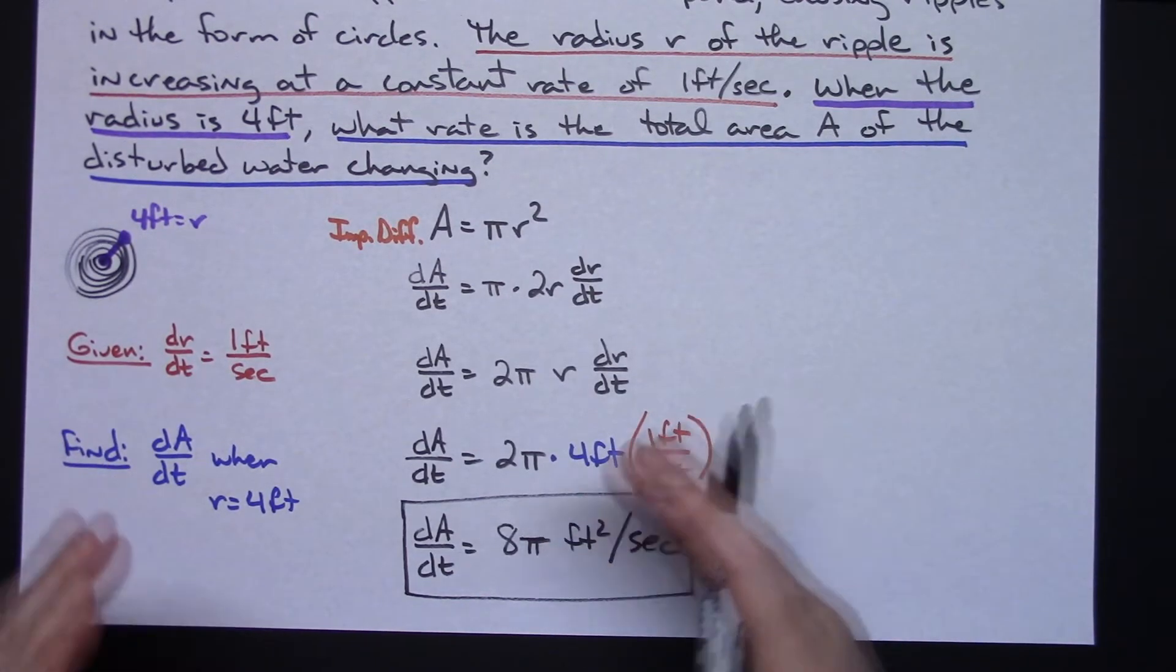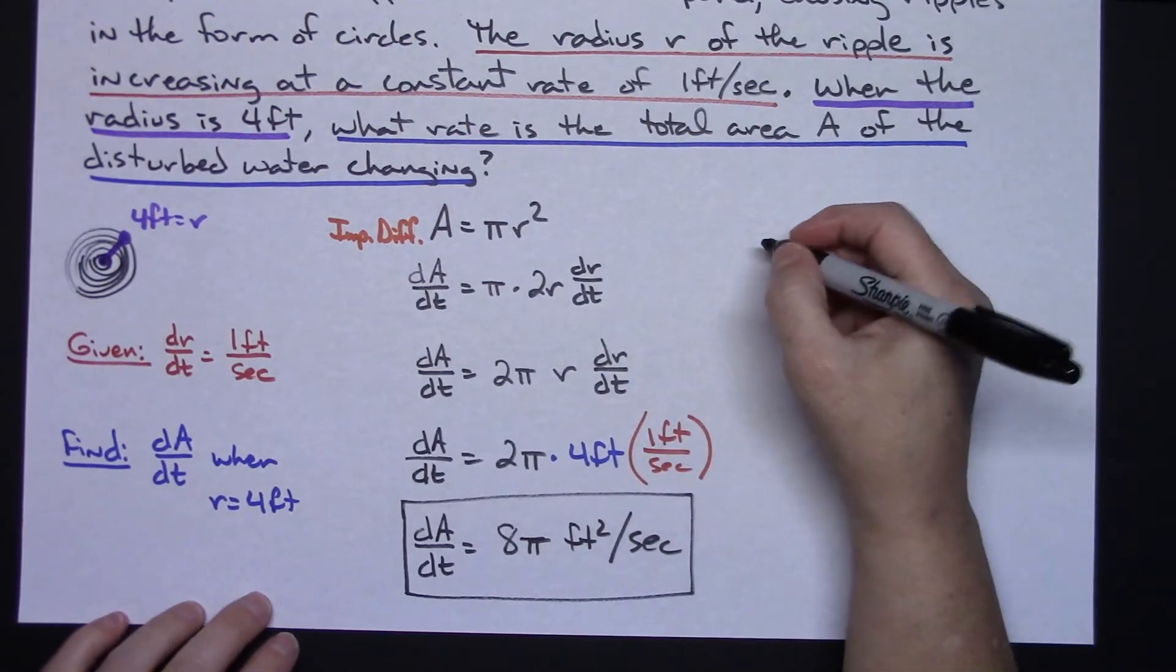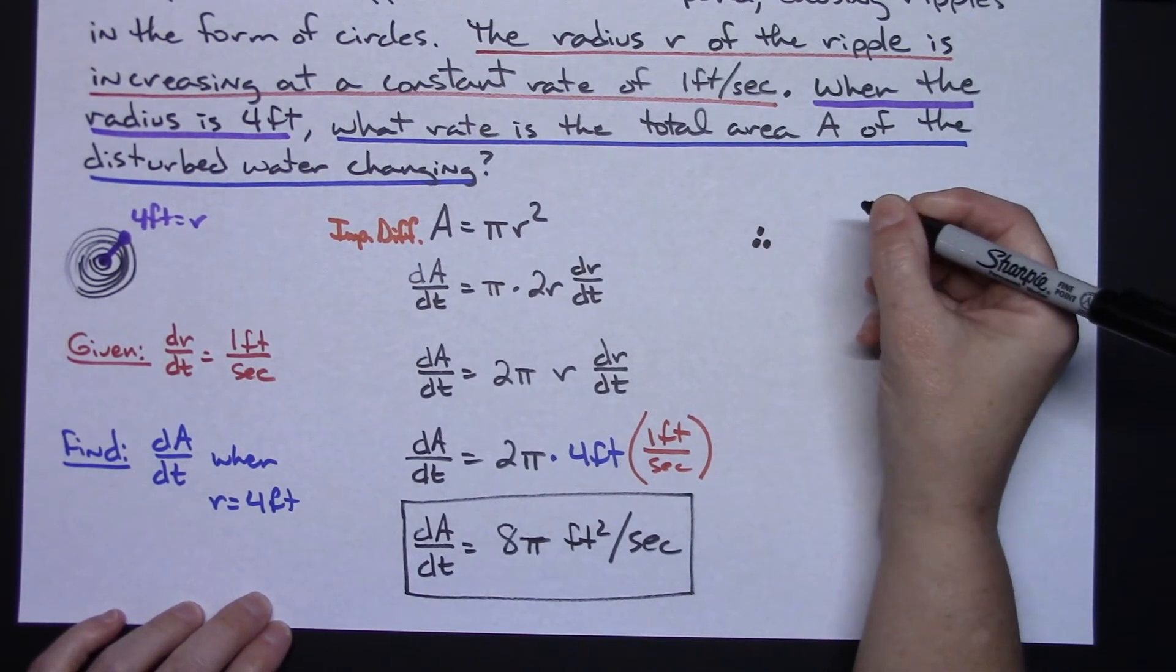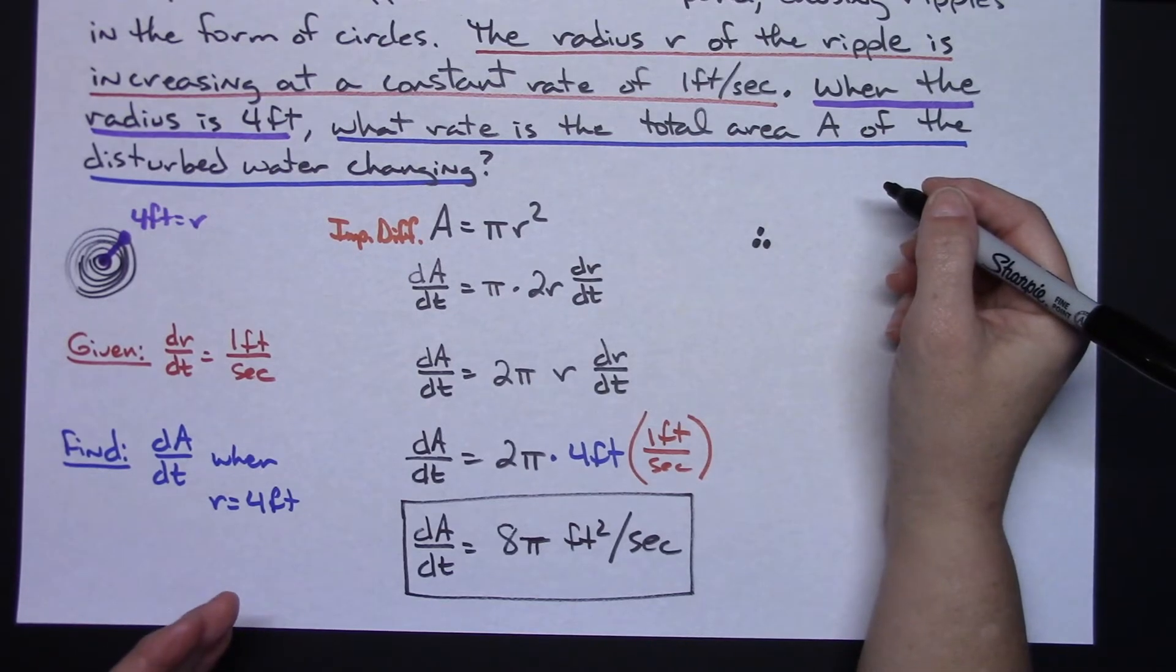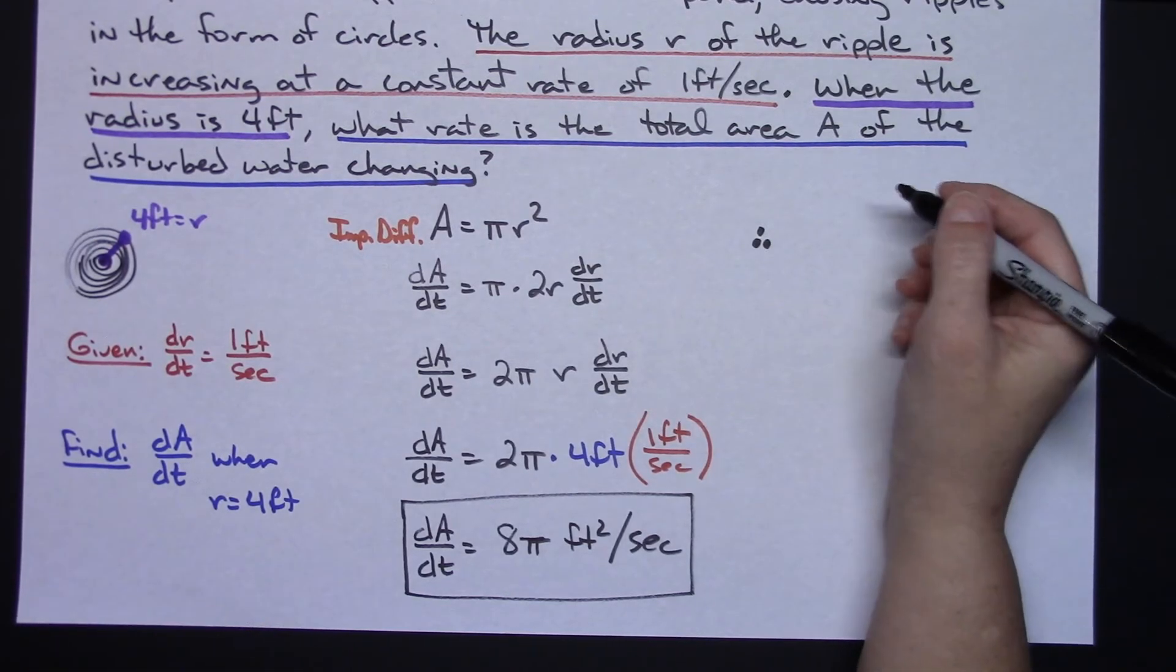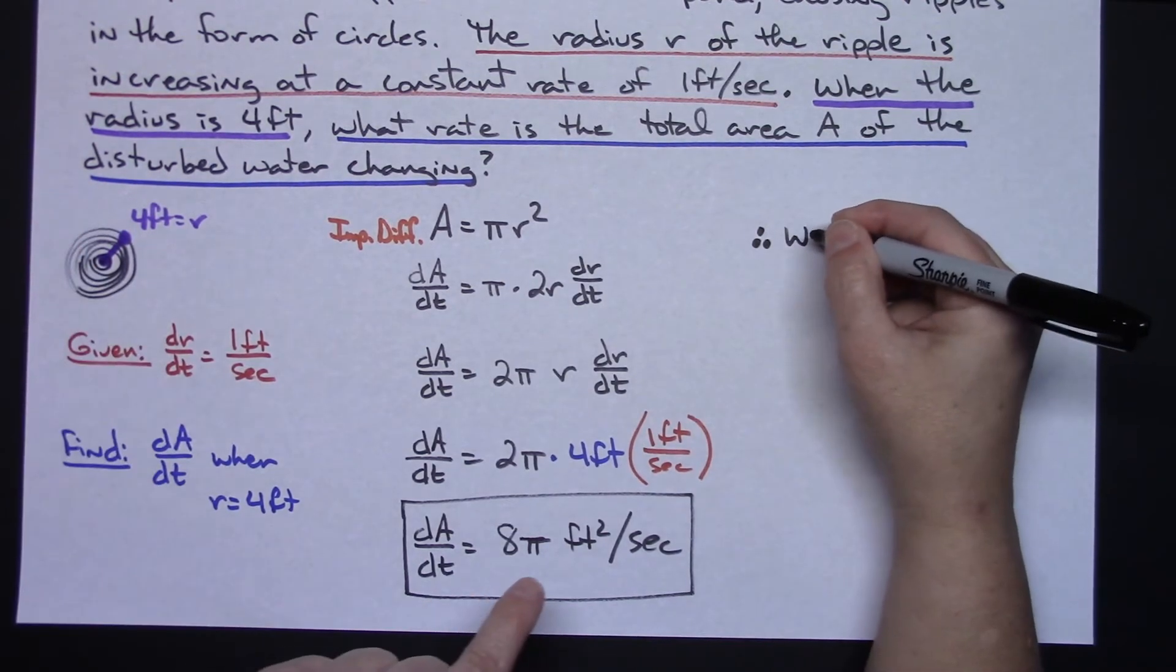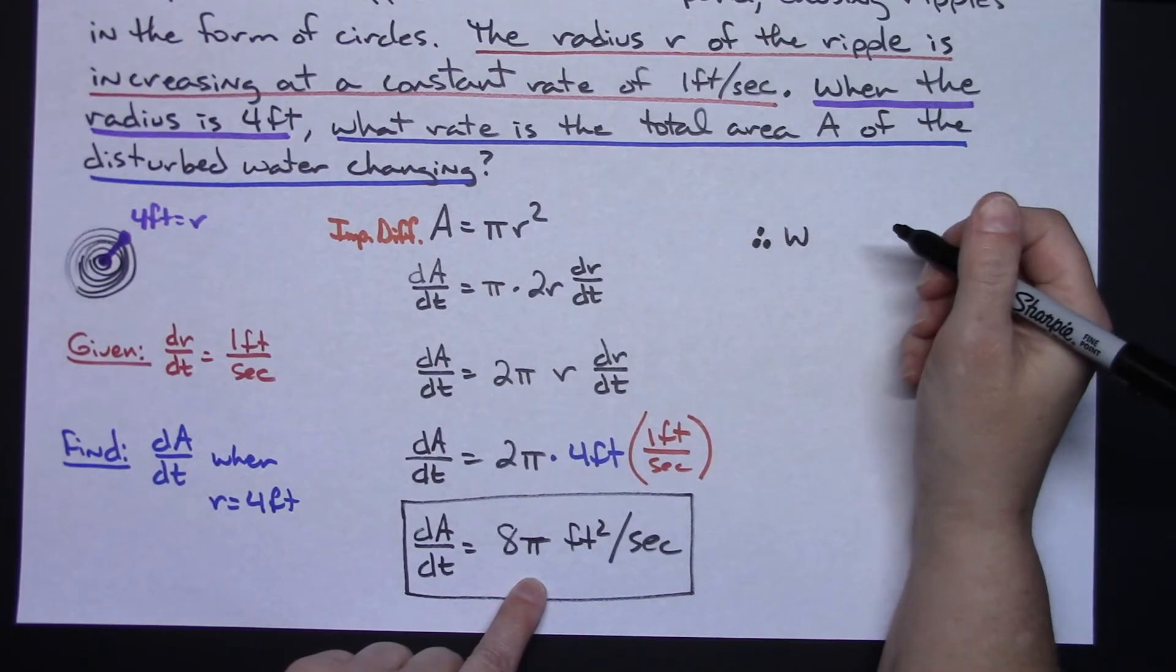At this point usually what I do with my students is I have them write a therefore statement just to kind of summarize what's going on and what they just found. So I usually have them then say okay therefore, well what did we really find? Well we were focusing on at the moment that the radius is 4.